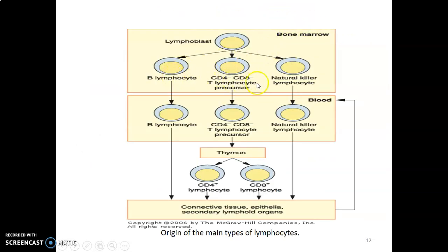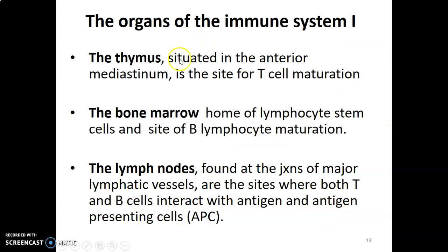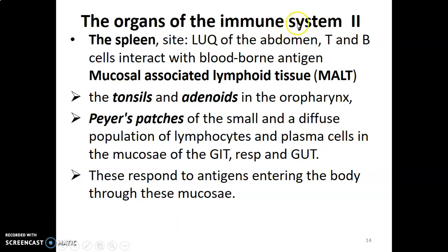In the bone marrow, B, T, and natural killer cells are produced. There are two types of T cells — CD4 and CD8 — depending on the receptor they have. B cells are produced and mature in the bone marrow, but T cells must go to the thymus to mature into either CD4 or CD8 cells. The thymus, located in the superior and anterior mediastinum, is the site for T cell maturation. Lymph nodes are found at junctions of major lymphatic vessels and are sites where T and B cells interact with antigen.